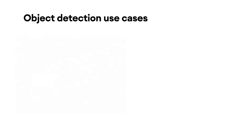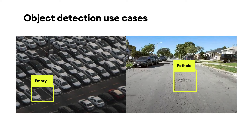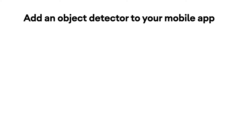Object detection is a very useful computer vision task. For example, you can use it to detect empty parking spots or detect road problems like potholes from driving footage.